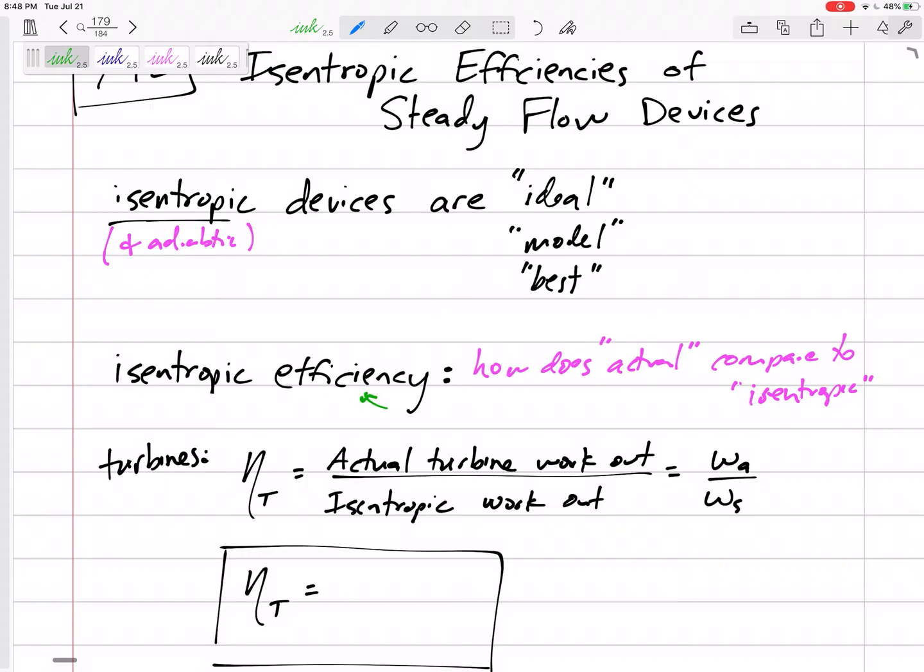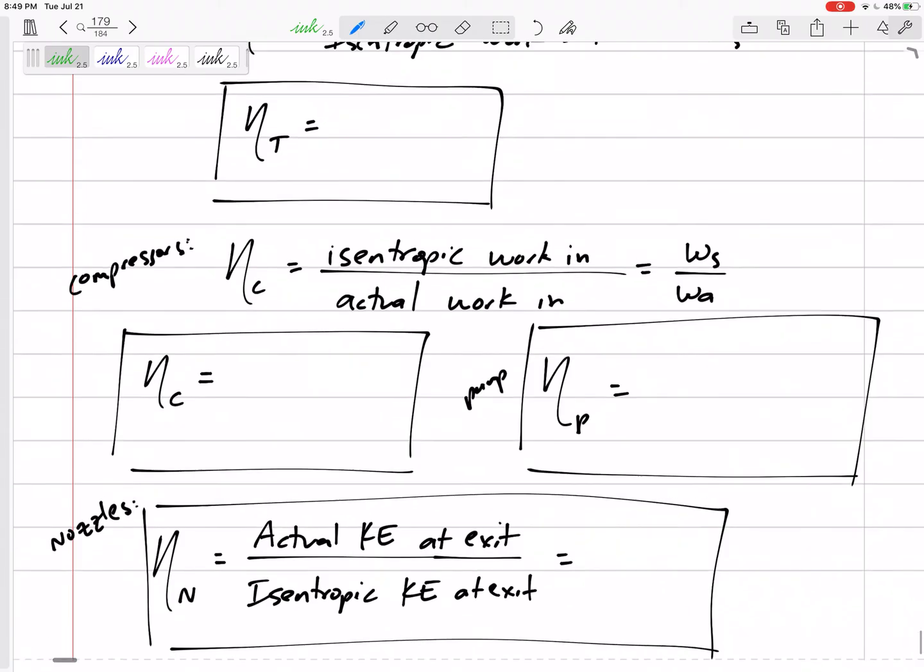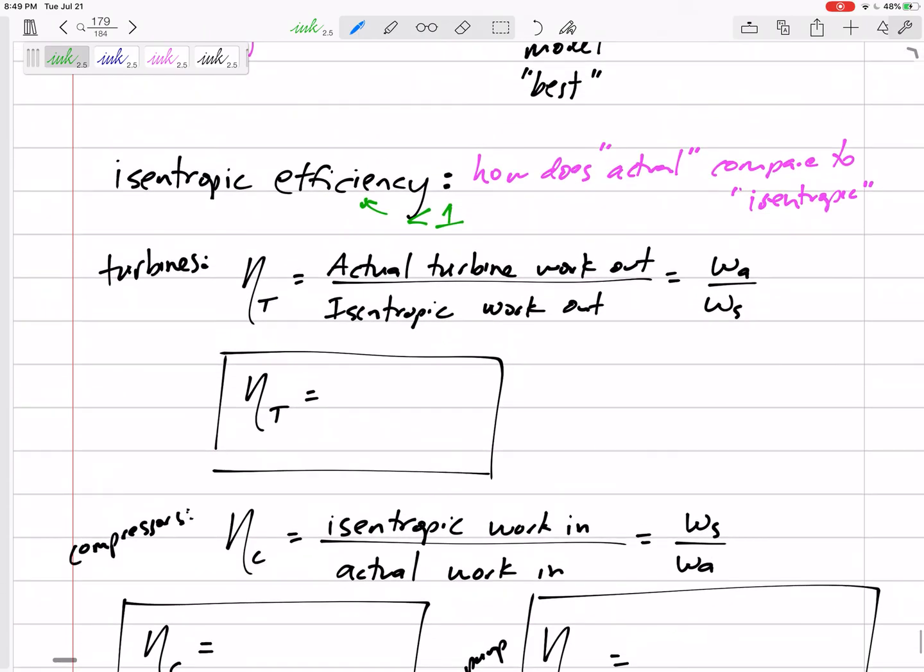we usually think of one as purely efficient, but everything is going to be less than one. Is it 0.87, 87% efficient? Is it 87% close to the isentropic process? So if we want an efficiency that's less than one, let's think about these different steady flow devices and how we can come up with an efficiency rating.